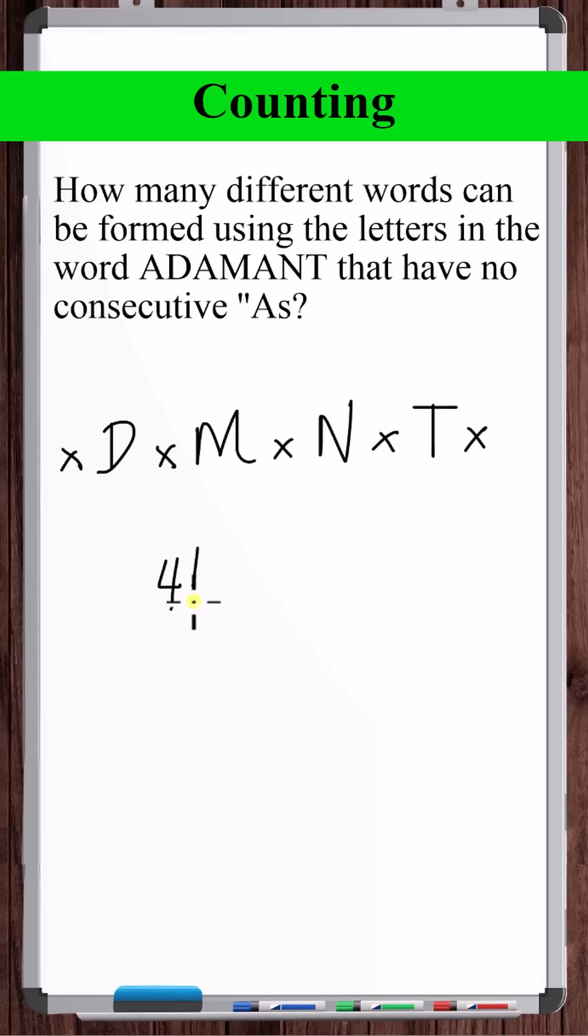So let's write four factorial. Now, what we're going to want to do is apply the product rule with this four factorial, which means that for every different arrangement of the D, M, N, and T, we're going to want to pause it and cycle through the different ways we can distribute the A's within the slots.